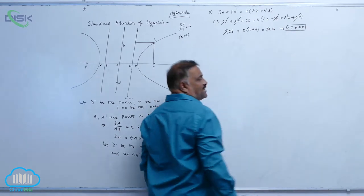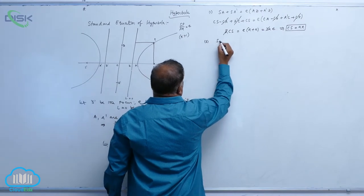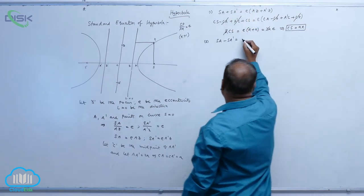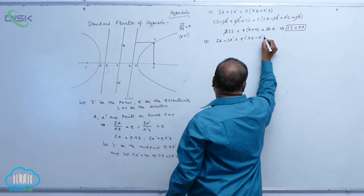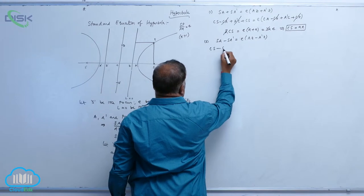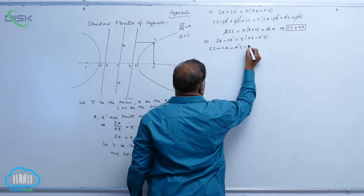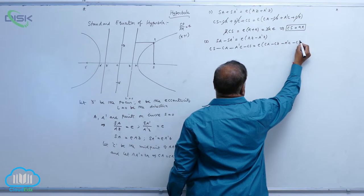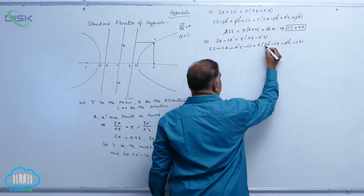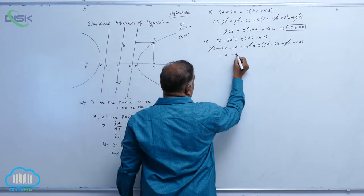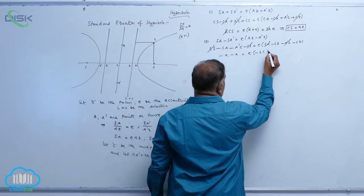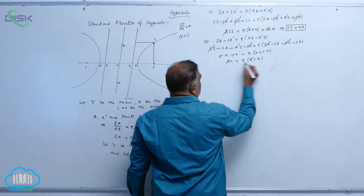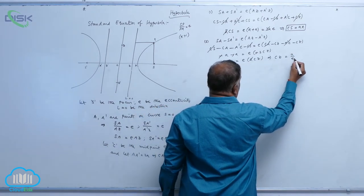Now let us go for subtraction. SA minus SA dash equals E times AZ minus A dash Z. Here it becomes CS minus CA minus A dash C minus CS, equal to E times CA minus CZ minus A dash C minus CZ. The CS terms cancel and the CA terms cancel, leaving 2A equals E times 2CZ. Therefore CZ equals A by E.